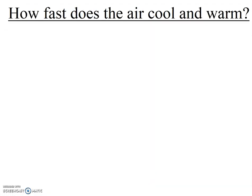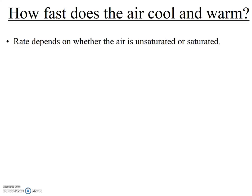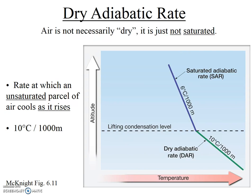So how fast does this cooling and warming occur? It depends. The rate of cooling depends on whether the air is unsaturated or saturated — another way of saying that is whether the air is at 100% relative humidity or not. When air is unsaturated, it cools at what's called the dry adiabatic lapse rate. Importantly, the air is not actually completely dry; it's just not saturated — not at 100% relative humidity. The dry adiabatic lapse rate is the rate at which an unsaturated parcel of air cools as it rises, and that rate is about 10 degrees Celsius per 1,000 meters.